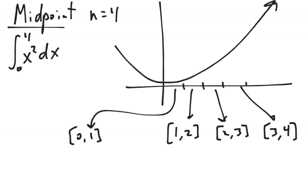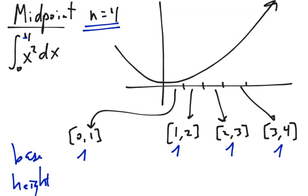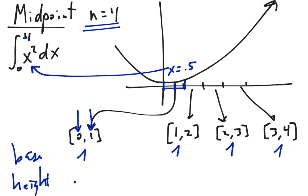Now we're going to do a midpoint sum — exact same setup with four rectangles approximating the same integral. Just like before, the base of all rectangles is 1. For the height: for a left-hand sum you use the left side, for a right-hand sum the right side, and for a midpoint sum you use the middle value of the interval. The first interval goes from 0 to 1, so the midpoint is 0.5. I plug in 0.5 squared for the height. The second gives 1.5 squared, the third 2.5 squared, and the last 3.5 squared.